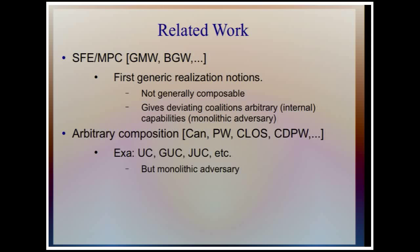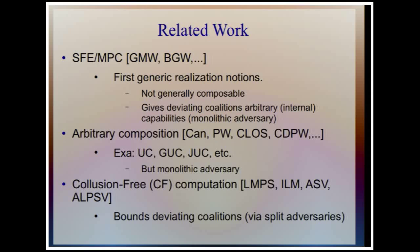Later, we got arbitrary composition starting with the work of Canetti — frameworks like UC, GUC, JUC — giving rise to realization notions that hold independently of what's happening on the side. On the other hand, we also have notions that provide bounds on colluding corrupt parties, namely collusion-free computation, starting with the works of Lipinski, Micali, Piker, and Shelat. These were focused on two computational models: ballot boxes and envelopes, and later the mediated model.